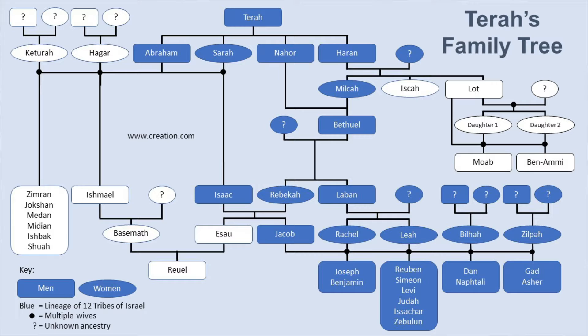They claim to come from one man who had four wives, and that man had 12 sons among those four wives and a couple of daughters, one of whom was named Dinah. I went through the scriptures and built a family tree of the 12 tribes of Israel. The 12 founding patriarchs — the 12 tribes — are all sons of Jacob.